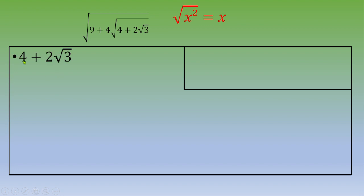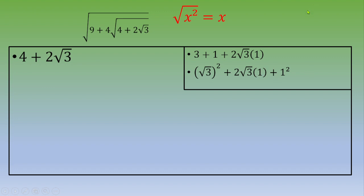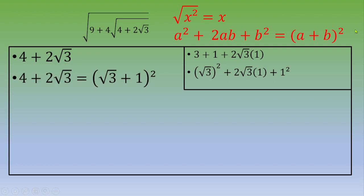So let's transform 4 plus 2 square root of 3. You can write this as 3 plus 1 plus 2 times square root of 3 times 1. You can transform the 3 into square root of 3 squared, giving square root of 3 squared plus 2 times square root of 3 times 1 plus 1 squared. You recognize the remarkable identity: a squared plus 2ab plus b squared equals a plus b squared.